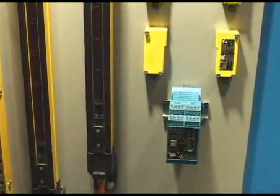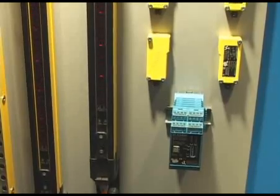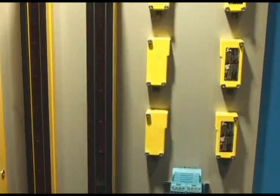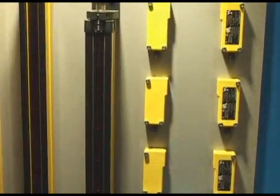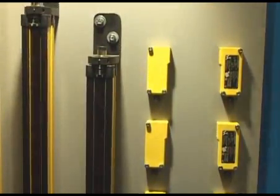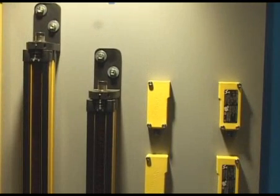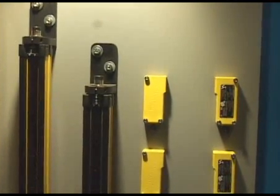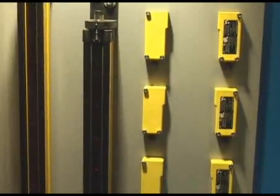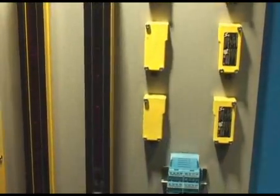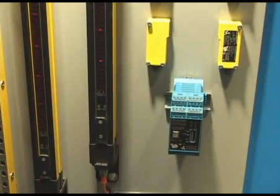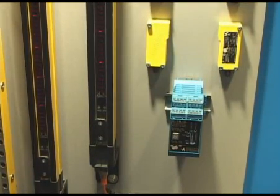Some of the functions and features that we have with the safety light curtains are muting, we have fixed blanking, we have float blanking, we have auto float blanking, we also have cascading where we can connect up to five sets of light curtains in series, and we also have continuous self-checking within our light curtains. We have finger and hand protection, and that's pretty much of our overview for our safety product line.